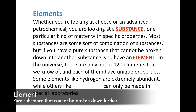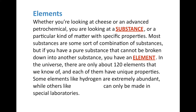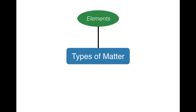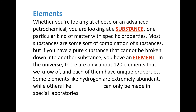In the universe, as of right now in 2015, including man-made elements that we've made in the laboratory, we only have about 120 elements that we know of, and each of them have unique properties. So let's go ahead and add this to our graphic organizer. The first type of matter we're going to talk about are elements. Elements are pure substances that cannot be broken down into anything else — if we do manage to break them down, they stop becoming atoms, which are single bits of matter. Some elements like hydrogen are extremely abundant — they're all over the universe.